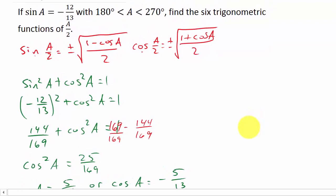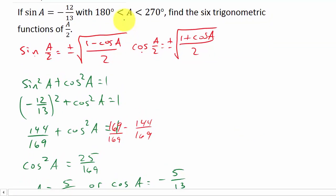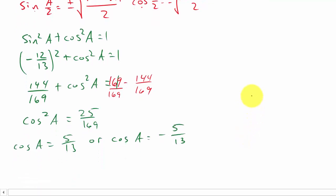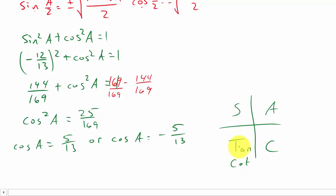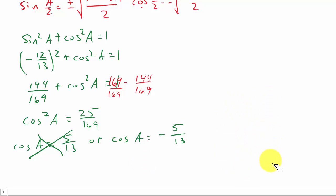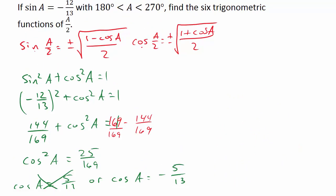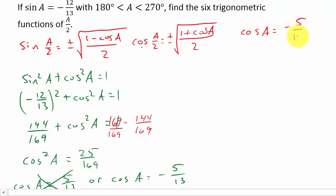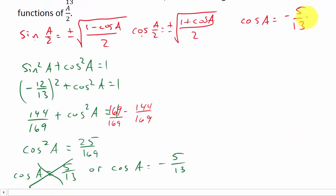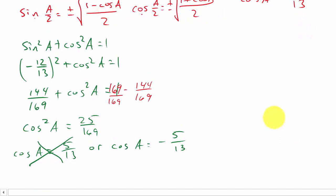Angle A is in the third quadrant. If you remember 'all students take calculus,' the only trig functions that are positive in the third quadrant are tangent and cotangent. So cosine is negative in the third quadrant, meaning cosine A equals negative 5 over 13. That's what I need to plug into my formulas.